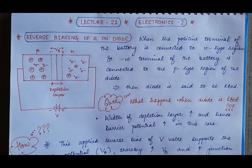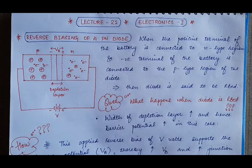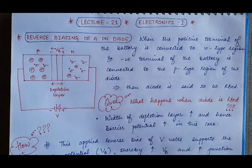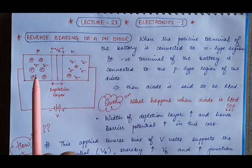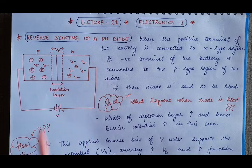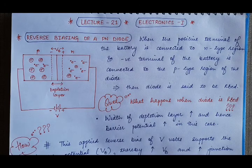Good morning students. In this lecture 21 of electronics, we will discuss the next type of biasing, which is the reverse biasing of a PN diode. In the previous lecture, we discussed forward biasing of a PN diode, where the P-type region was connected to the positive terminal of the battery and the N-type region to the negative terminal, and the diode was said to be forward biased.